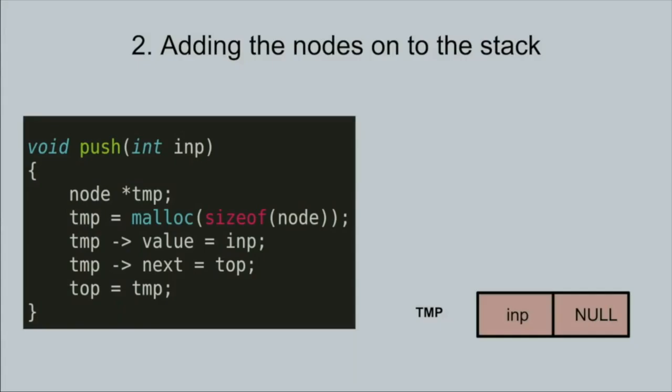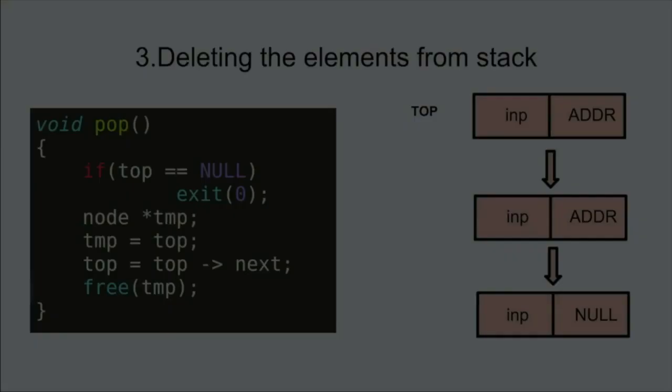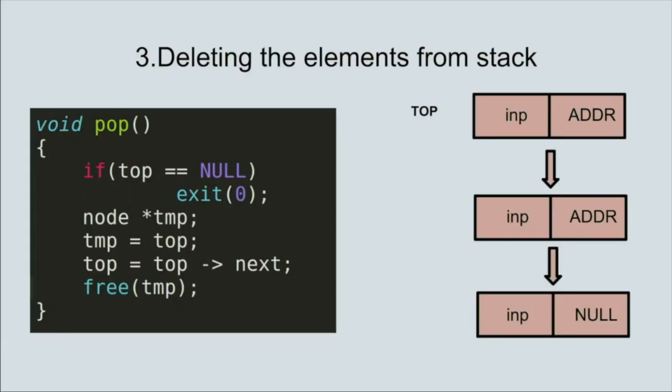Now we'll see how to push nodes onto the stack. The new node to be added is called tmp and value is assigned as the argument inp. It is made to point to the previous node, then this node is made the top node. Remember, the first node always points to null.